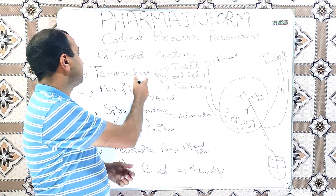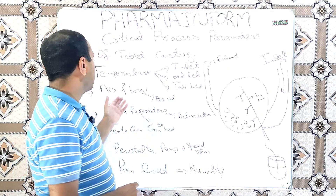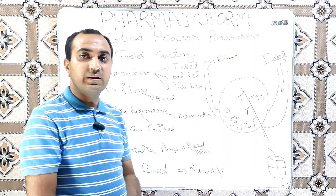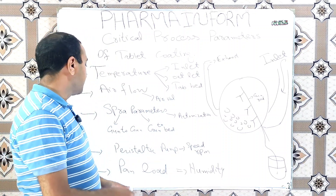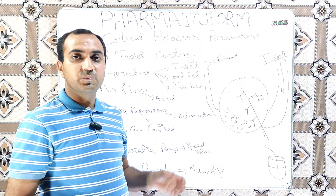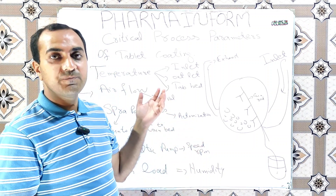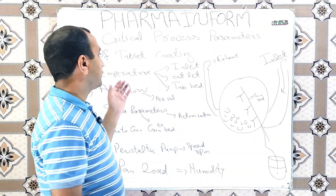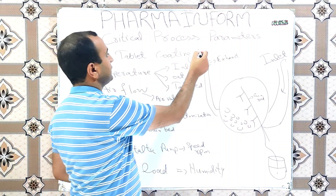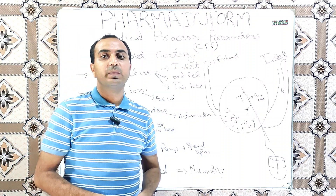We will discuss what are the different parameters of temperature which we should critically monitor, what are the critical parameters of air flow, what parameters we should observe and maintain for the spraying process, at what RPMs our coating solution should be sprayed, what will be the impact of humidity over our coating process, and what will be the impact of pan load. These are all critical process parameters, also known as CPP, of tablet coating.